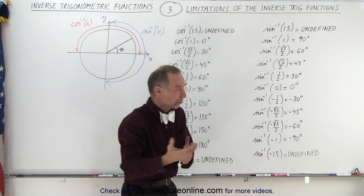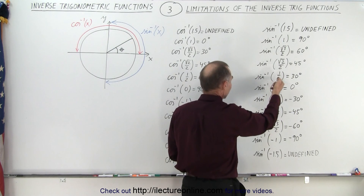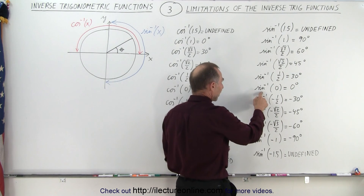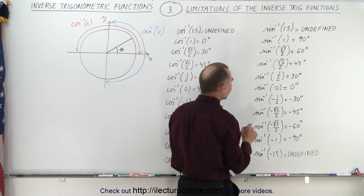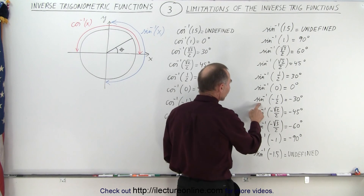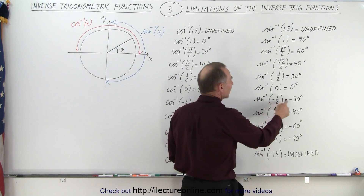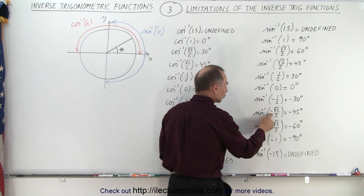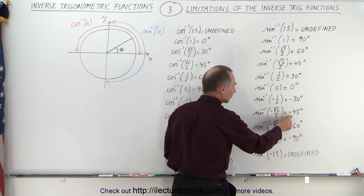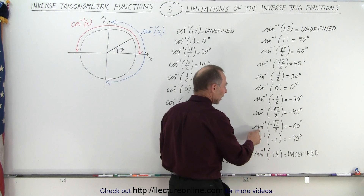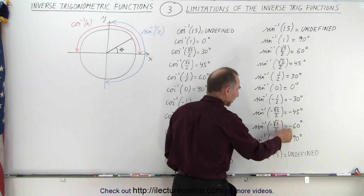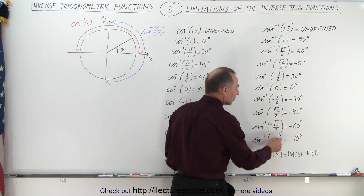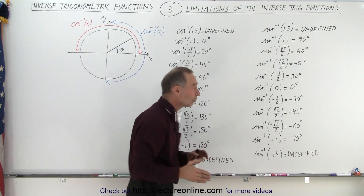So therefore when you take the inverse function, the inverse sine of 1 half, you get back 30 degrees. The inverse sine of 0 is 0 degrees. But now notice when you take the inverse sine of negative 1 half, you get negative 30 degrees. The inverse sine of the negative square root of 2 over 2 gives you negative 45 degrees. The inverse sine of the negative square root of 3 over 2 gives you negative 60 degrees. And the inverse sine of negative 1 gives you minus 90 degrees.